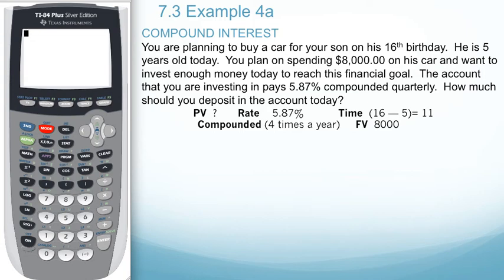Let's look at example four with the TVM solver solving for present value. You are planning to buy a car for your son on his 16th birthday. He is five years old today. You plan on spending $8,000 on his car and want to invest enough money today to reach this financial goal. The account that you are investing in pays 5.87% compounded quarterly. How much should you deposit in the account today?